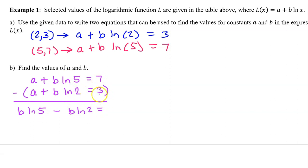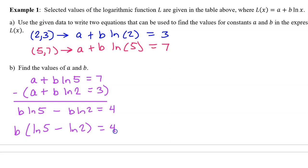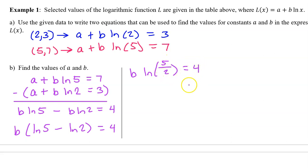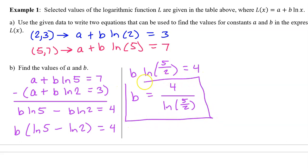On the right-hand side of the equation, we have 7 minus 3, which is 4. Now that a is gone, we can solve for b. Factor out the common factor b, leaving behind the natural log of 5 minus the natural log of 2, equal to 4. The difference of two logs can be written as the single log of a quotient, so b times the natural log of 5 over 2 equals 4. Dividing both sides by the natural log of 5 over 2 gives us b equals 4 over the natural log of 5 over 2.